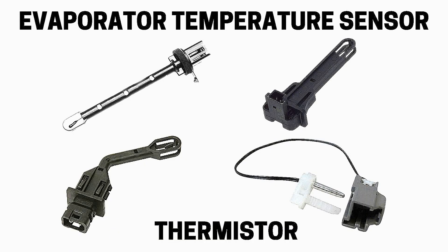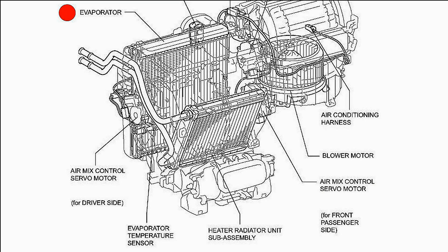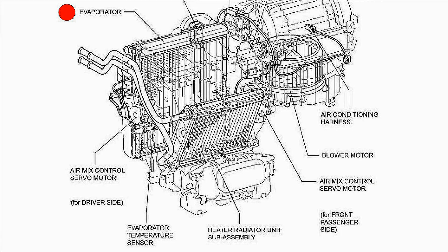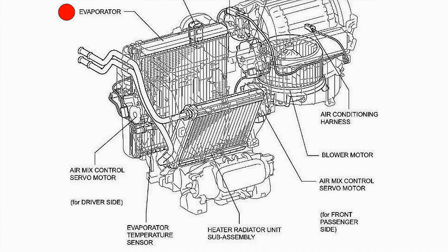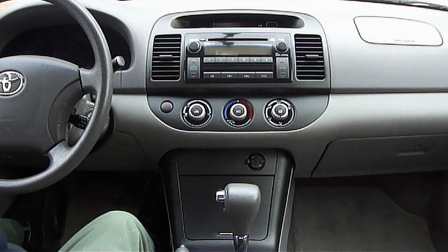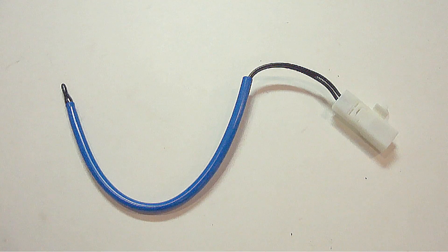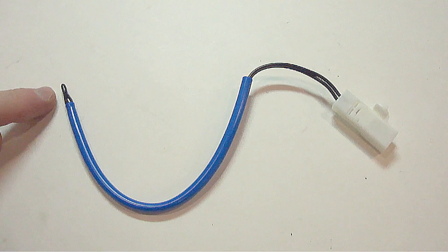Another reason the clutch will not turn is due to a faulty evaporator temperature sensor, also referred to as a thermistor, as shown in this picture. These come in all different shapes and sizes. The evaporator temperature sensor monitors the temperature of the air conditioner system's evaporator, which is located inside the dashboard. The evaporator temperature sensor will be located on or near the evaporator. Another common symptom of a faulty evaporator temperature sensor is when the air conditioner is turned on, the temperature of the air coming out of the vents will fluctuate. Here's an evaporator temperature sensor, and this is the temperature probe.